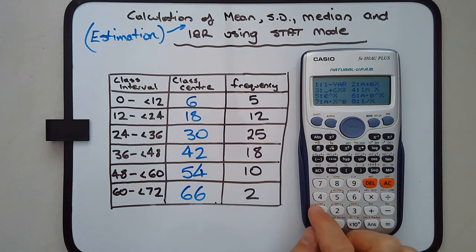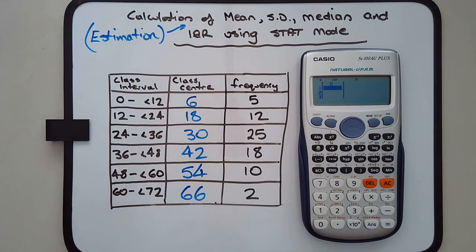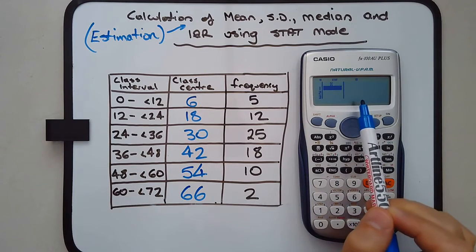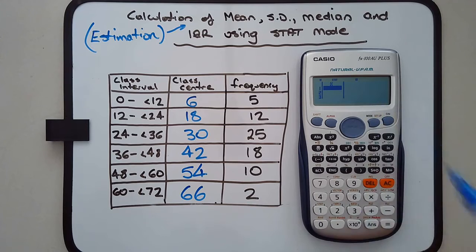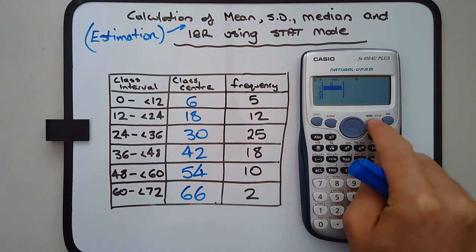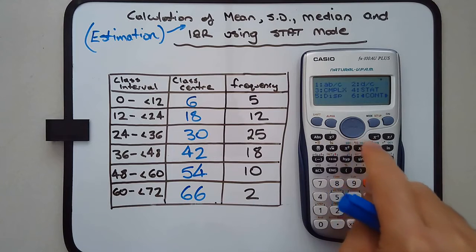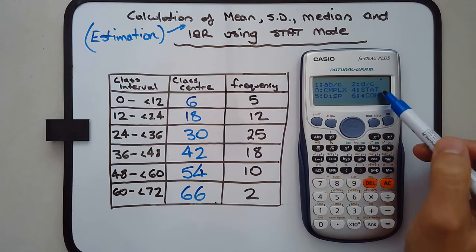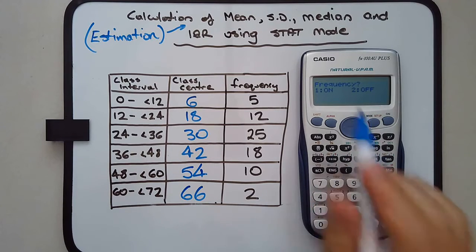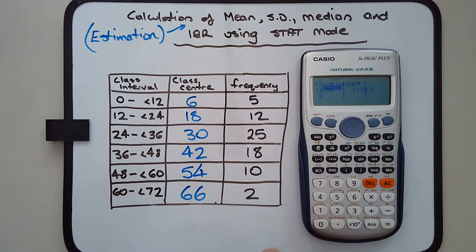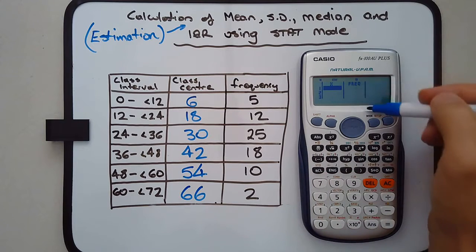Then pick one var. Notice that there's no frequency column, so we need to add it. Press shift setup, scroll down to STAT, number 4. Frequency on and off - select frequency on. Now you can see the frequency column is there.